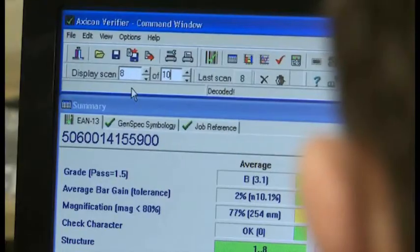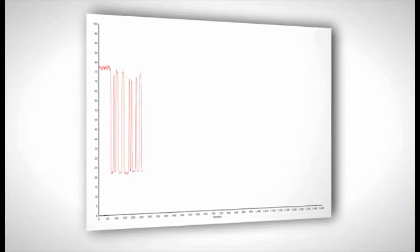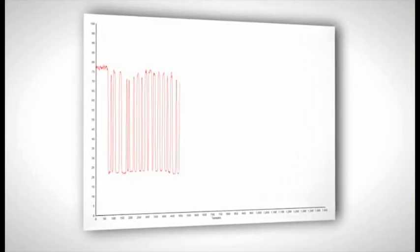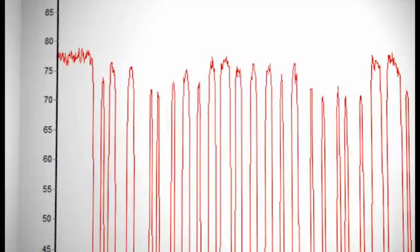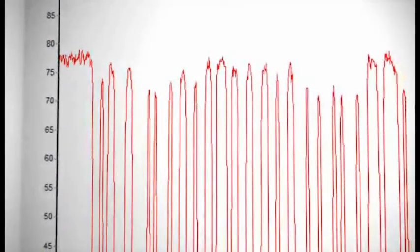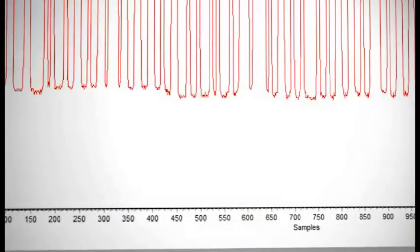Take your 10 scans. On each scan, the verifier will draw itself a graph or profile of the reflected light from the barcode. This is the scan reflectance profile. The high points on the graph are the background spaces reflecting a lot of light. The low points on the graph are the bars reflecting less light.